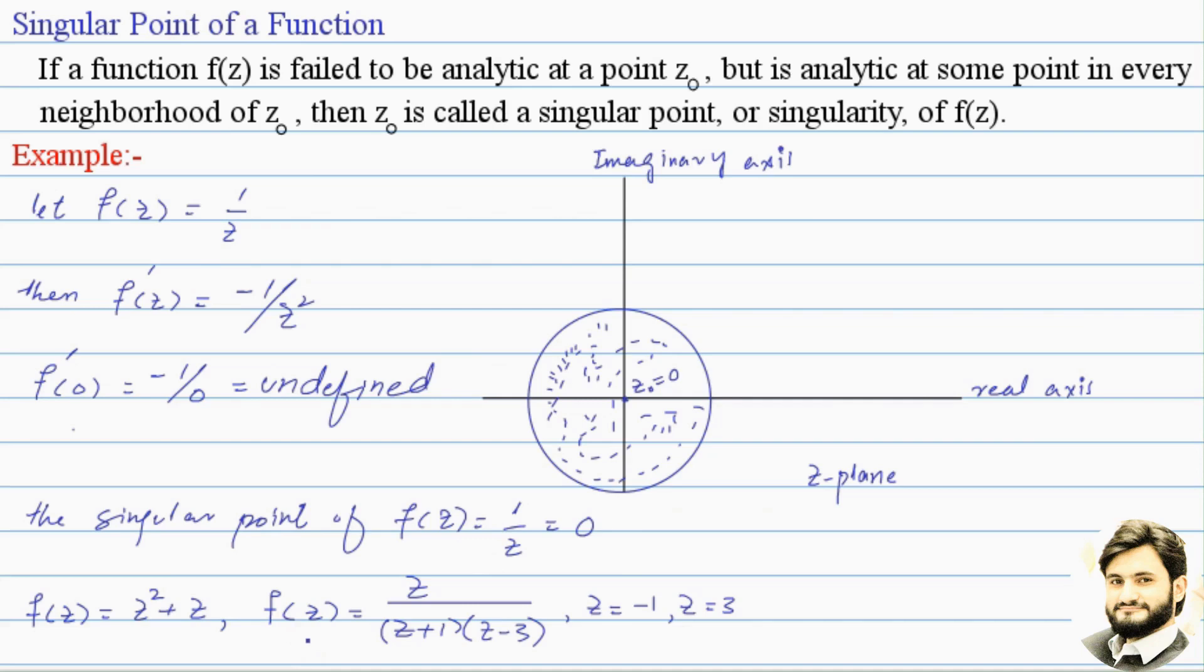There can also be functions with infinitely many singular points. For example, f(z) = 1/cos(z), where z = (2n+1)π/2, where n belongs to the set of integers. These are all the infinite points that are singular points for this function f(z).